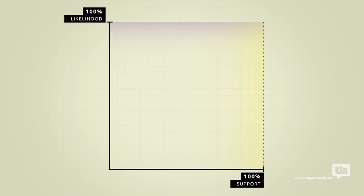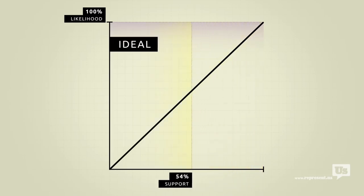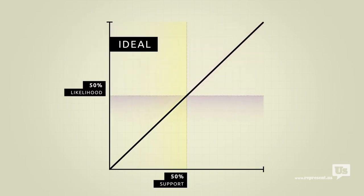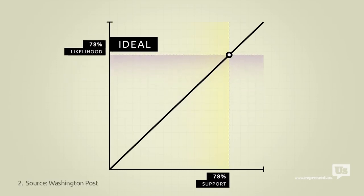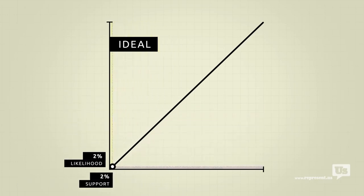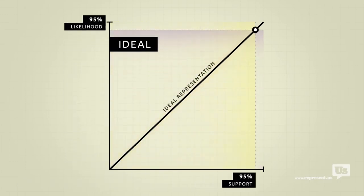On this graph an ideal republic would look like this. If 50% of the public supports an idea there's a 50% chance of it becoming law. If 80% of us support something there's an 80% chance. You get the idea. Now most Americans would probably agree that with a few exceptions we should be as close to this ideal as possible.